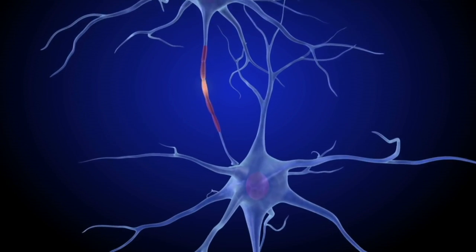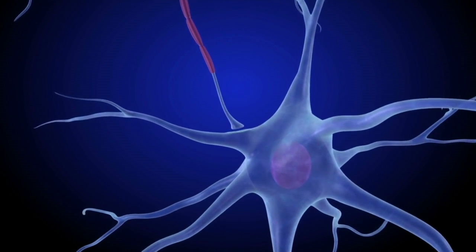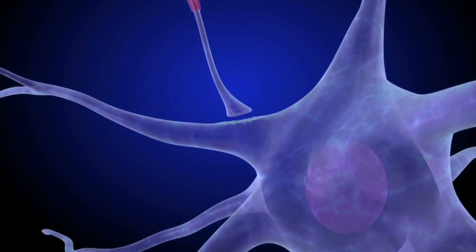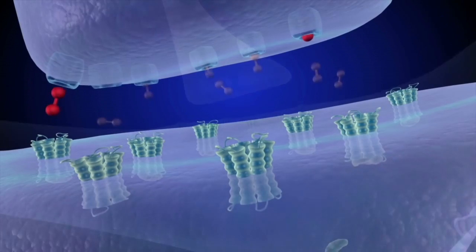Feeling pleasure motivates us to repeat behaviors. When the reward circuit is activated, each individual cell on the circuit relays electrical and chemical signals.